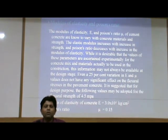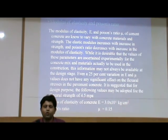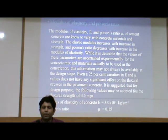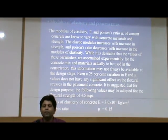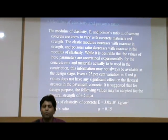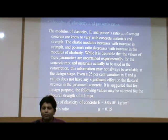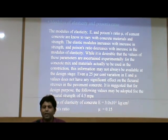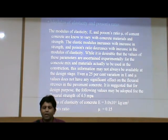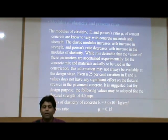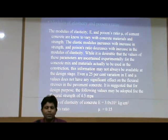Regarding modulus of elasticity and Poisson's ratio, the modulus of elasticity E and Poisson's ratio mu of cement concrete are known to vary with concrete materials and strength. The elastic modulus increases with increase in strength, and Poisson's ratio decreases with increase in modulus of elasticity. While it is desirable that the values of these parameters are ascertained experimentally for the concrete mix and materials to be used in construction, this information may not always be available at the design stage. Even 25% variation in E and mu values does not have any significant effect on the flexural stresses in the pavement concrete.